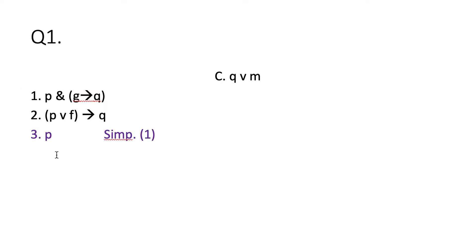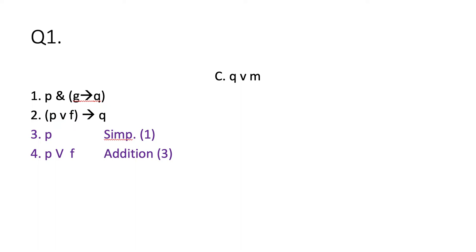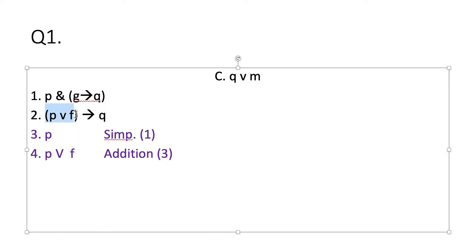I'm going to try and show that Q follows from the truth of these two premises. First I'll use simplification on my first premise — it's a conjunction — and get P on its own. Then I want to get Q. I can see Q over here. I know what I can do to P to get the antecedent of the conditional on line two. I'm going to use the rule of addition on line three to turn P into P or F, which is the antecedent of the conditional on line two, putting me in a position to use modus ponens on lines two and four.